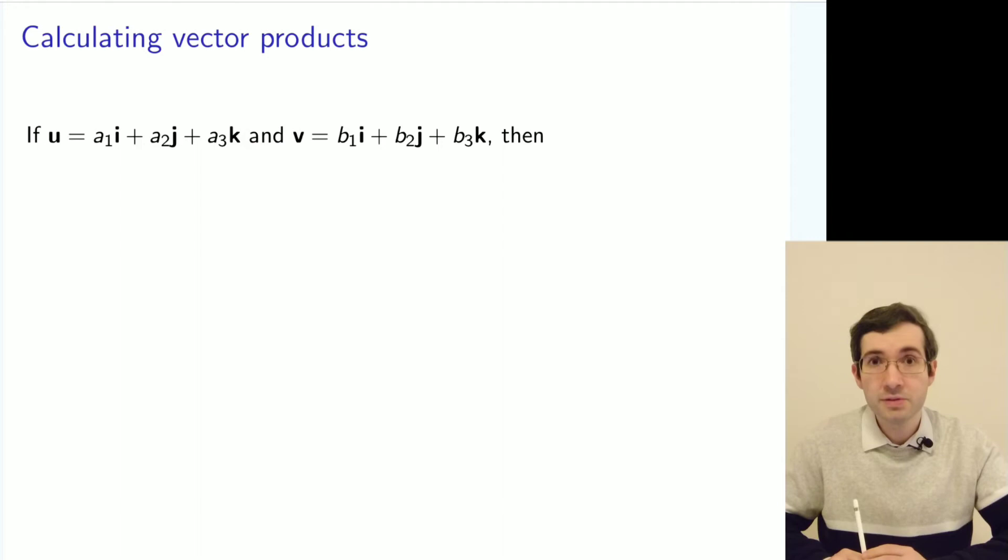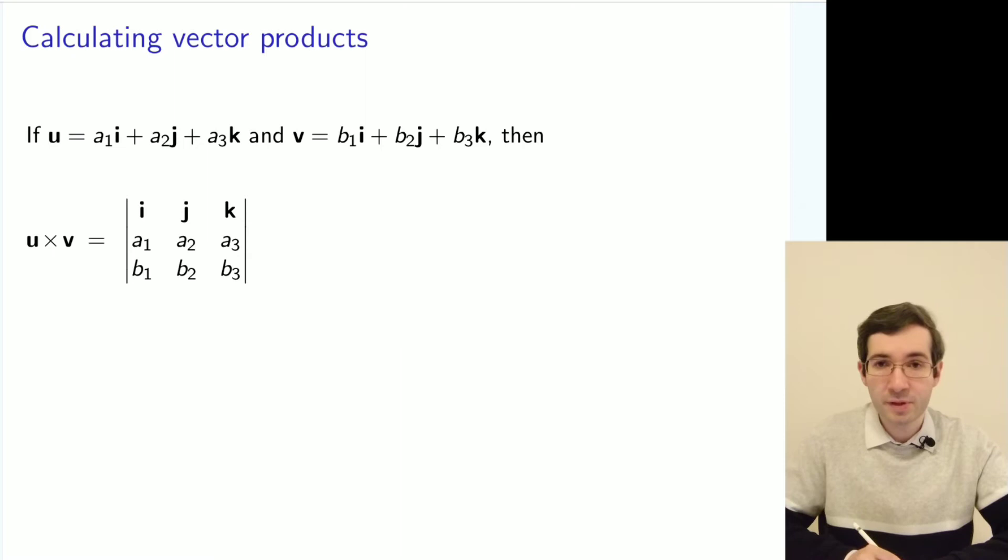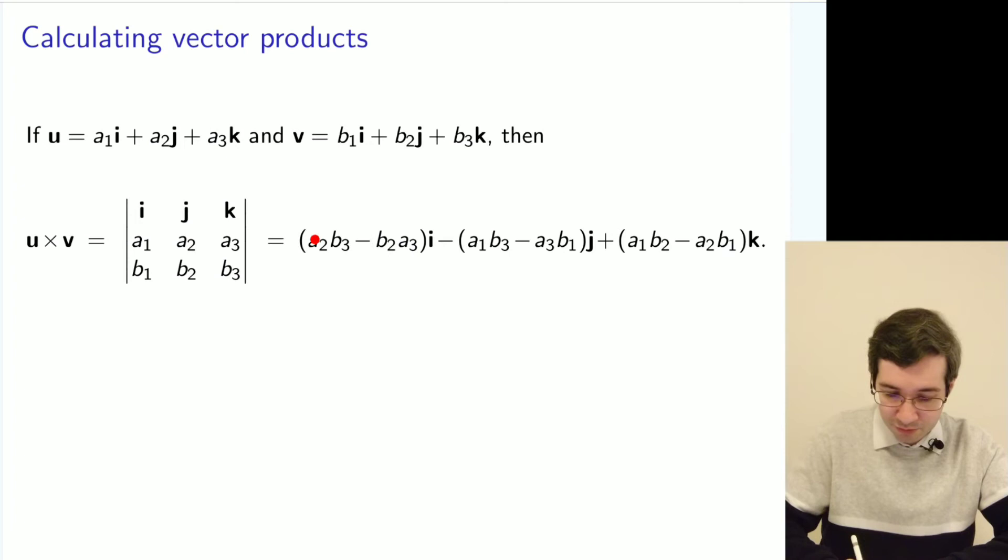Again, the coordinate form is a very good way to compute the vector product. The most recommended and easiest way is to use the determinant form where you take a matrix. The first row is the unit directions i, j, k. The second is the coordinates of the first vector, the third is the second vector.